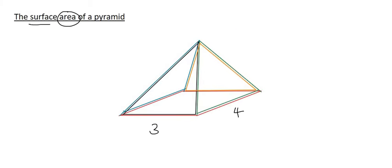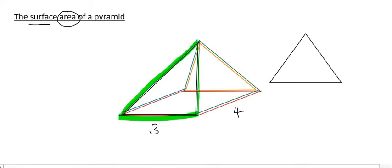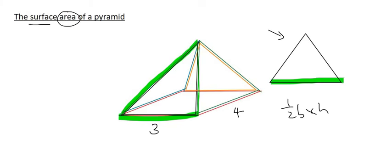So let's say, for example, we wanted to work out the area of this triangle over here. Well, that would look like this. So I've gone and I've isolated it over here. And so if we wanted to work out its area, you would use half base times height, where this length over here could be taken as the base, and then the height would be this over here.